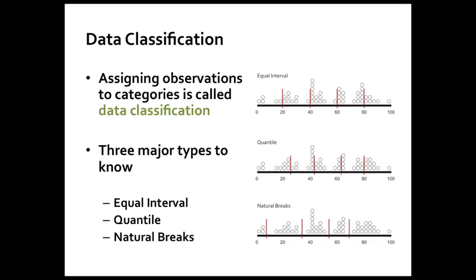Finally, natural breaks — in the bottom right corner. This method is driven by some fancy mathematics. You let an algorithm decide where the natural breaks in the data distribution are, and it actually works pretty well in practice. You don't need to understand the algorithm because it's not germane to this class.